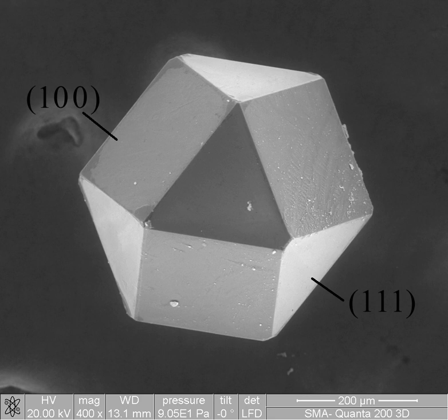Biomaterials can be derived either from nature or synthesized in a laboratory using a variety of chemical approaches using metallic components, polymers, bioceramics, or composite materials. They are often intended or adapted for medical applications, such as biomedical devices which perform, augment, or replace a natural function. Such functions may be benign, like being used for a heart valve, or may be bioactive with a more interactive functionality such as hydroxylapatite-coated hip implants.